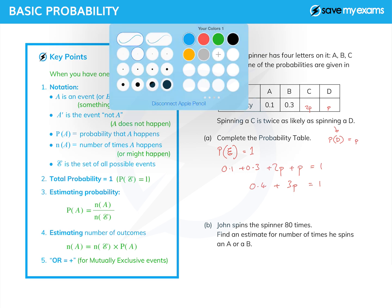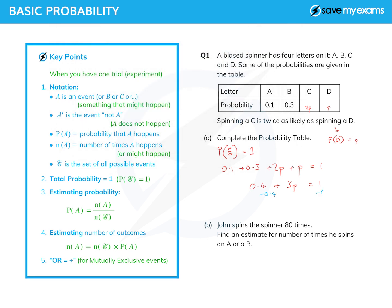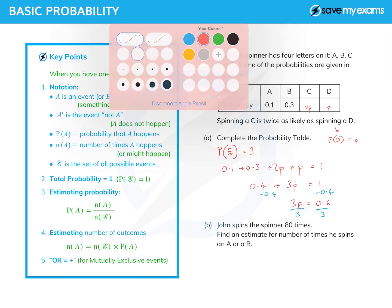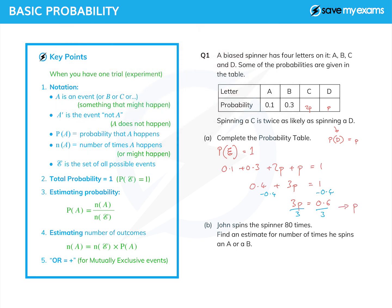And then we just solve the equation in the normal way. So we subtract 0.4 from both sides to get the P bit on its own, which gives me 3P equals 0.6. And if I divide both sides by 3, that gives me the answer that I'm looking for, that P equals 0.2. And now I can fill in my probability table. So 2P is 0.4, and P is 0.2. And I have completed my probability table.